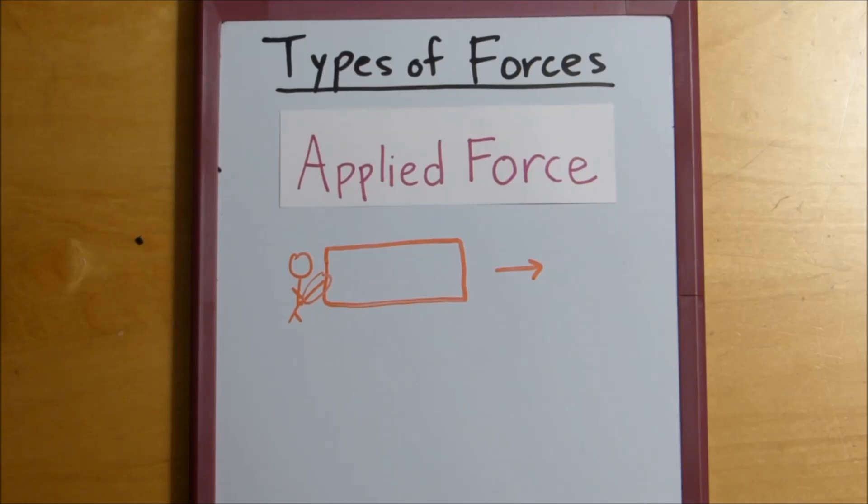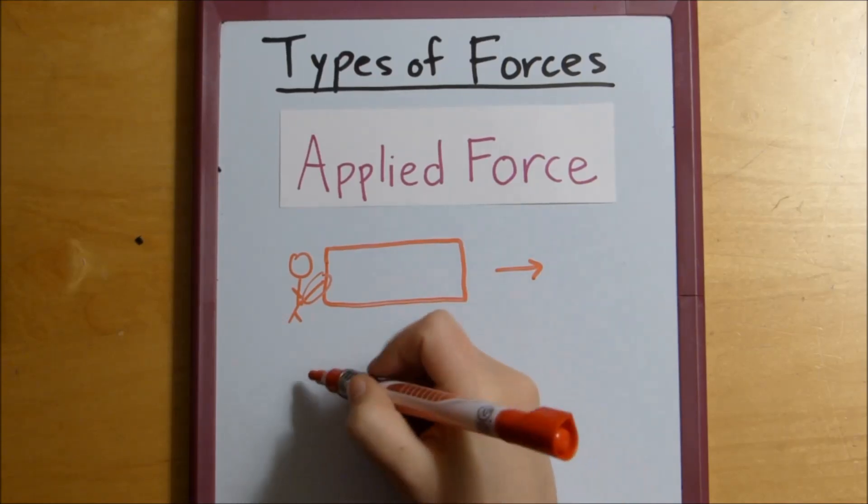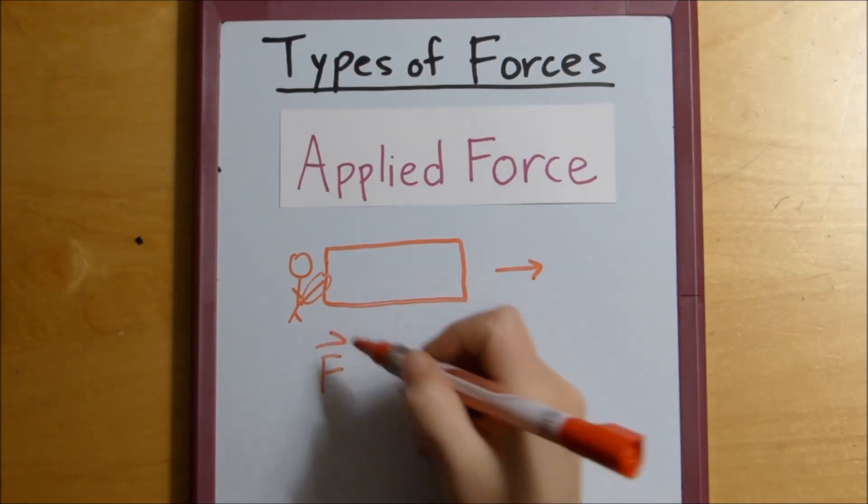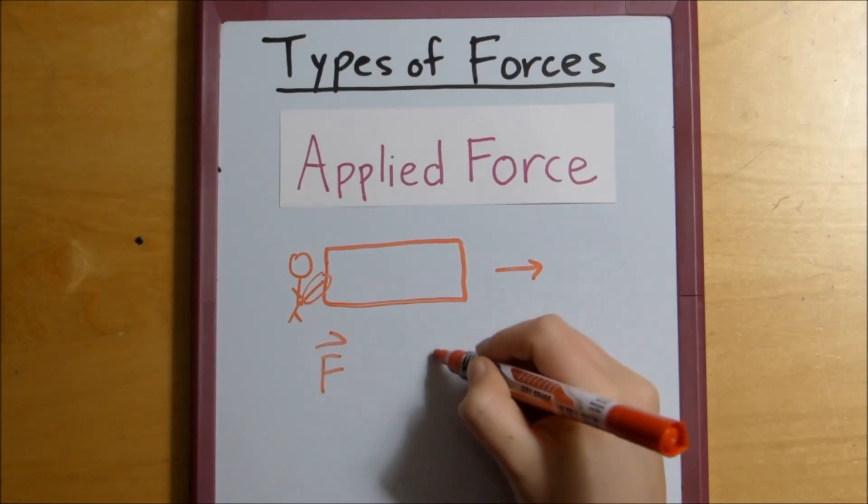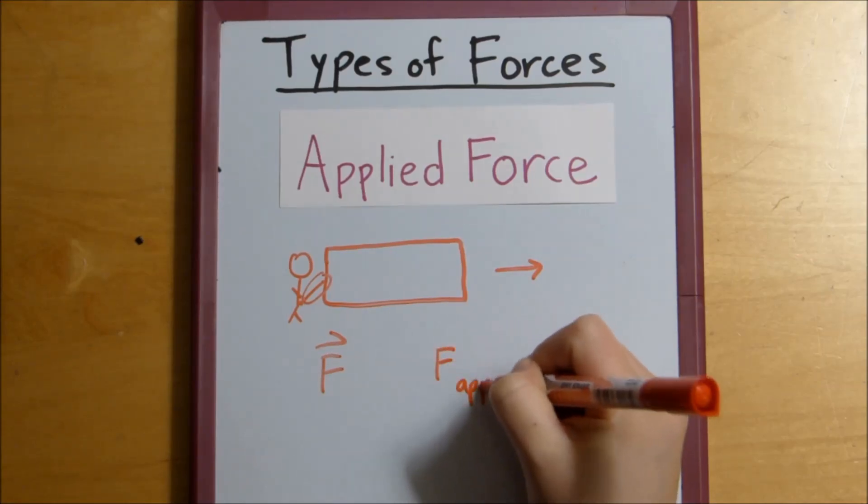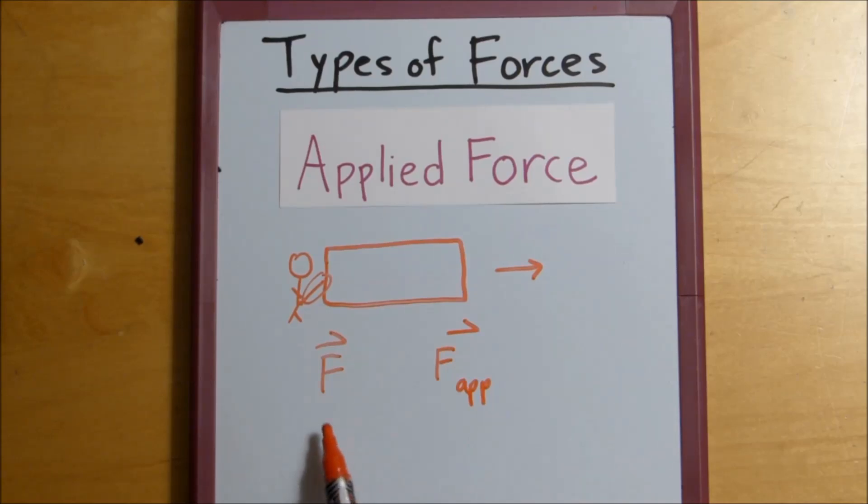And in free body diagrams, this applied force is written either as F or as F applied. I'm accustomed to just the single F with the vector over it, but I have seen it as F apt too. It really doesn't matter how you label your free body diagrams, as long as the person who is grading it or who is looking at it understands what you mean.